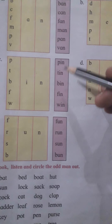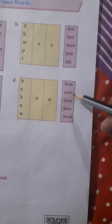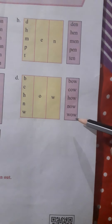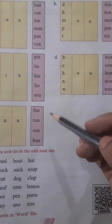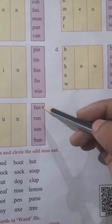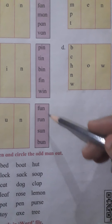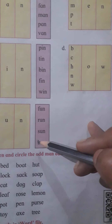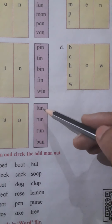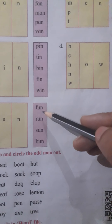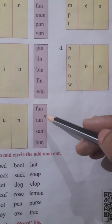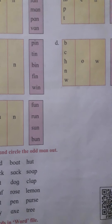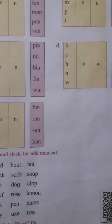These words rhyme with each other, and these words also rhyme with each other, and the last chart's words also rhyme with each other. Only the first letters are different — the 2nd and 3rd letters are the same.